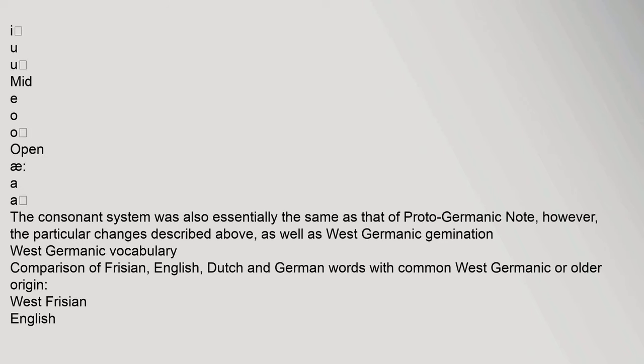The West Germanic Vocabulary section provides a comparison of Frisian, English, Dutch, and German words with common West Germanic or Old origins, showing West Frisian and English alongside Dutch, German, Old English, Old High German, Proto-West Germanic, and Proto-Germanic forms.